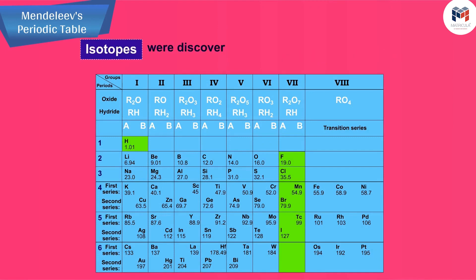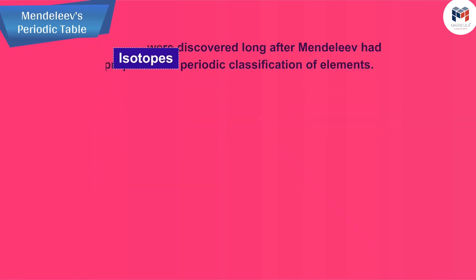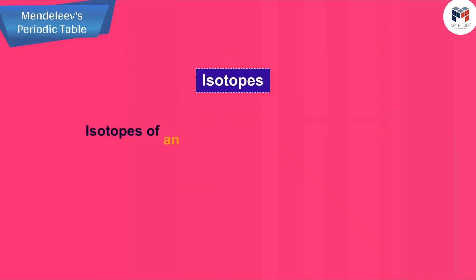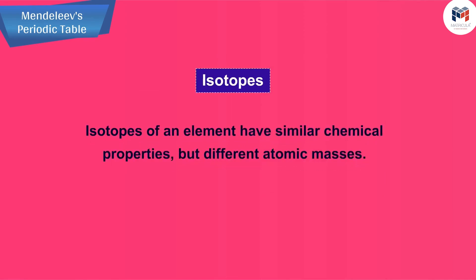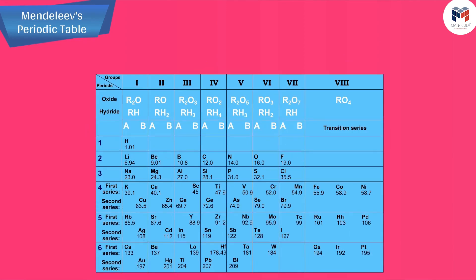Isotopes were discovered long after Mendeleev had proposed his periodic classification of elements. Let us recall that isotopes of an element have similar chemical properties but different atomic masses. Thus, isotopes of all elements posed a challenge to Mendeleev's periodic law.